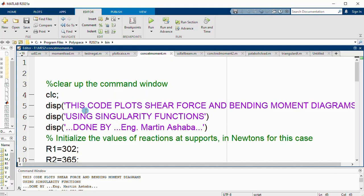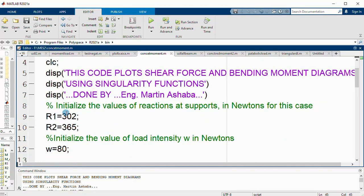I am defining the heading of this code. This code approaches shear force and bending moment diagrams using the command display. Once I run it, it should come in the command window. Then using singularity functions, done by me. I am initializing the values of reactions at the supports in newtons. R1 is 302 newtons, R2 is 365 newtons.